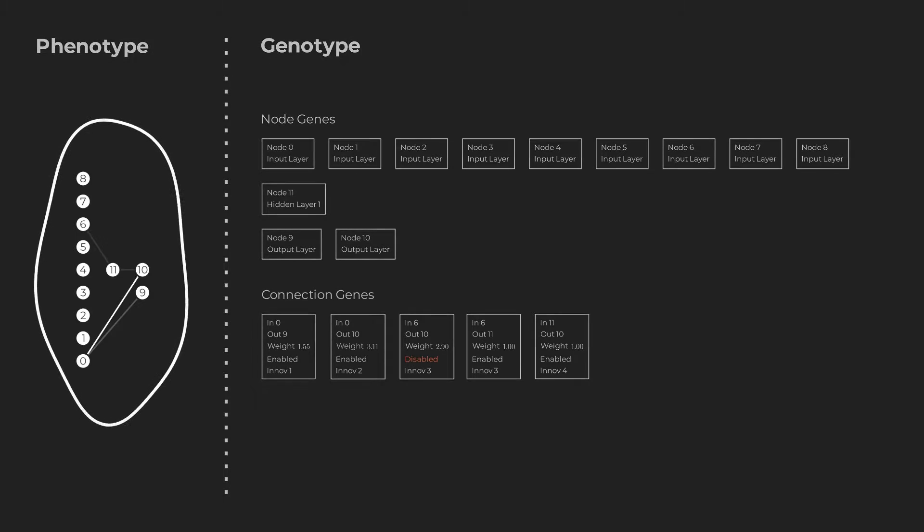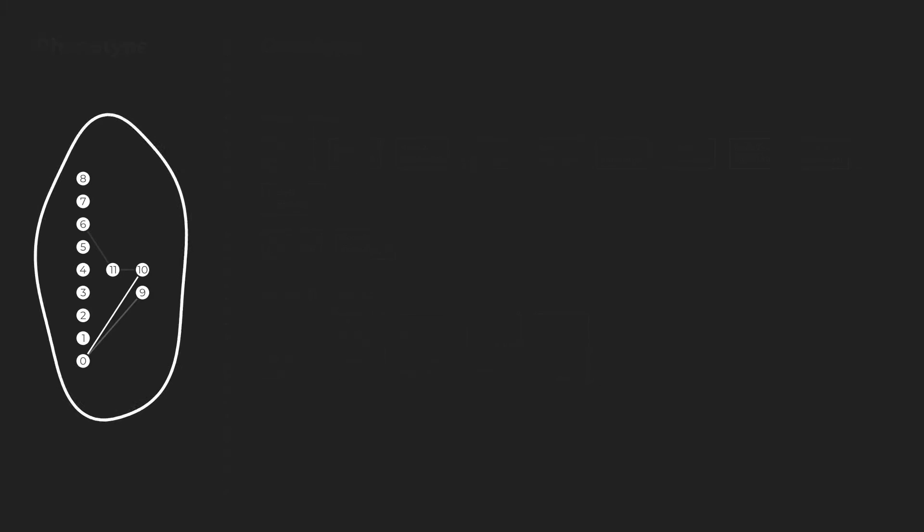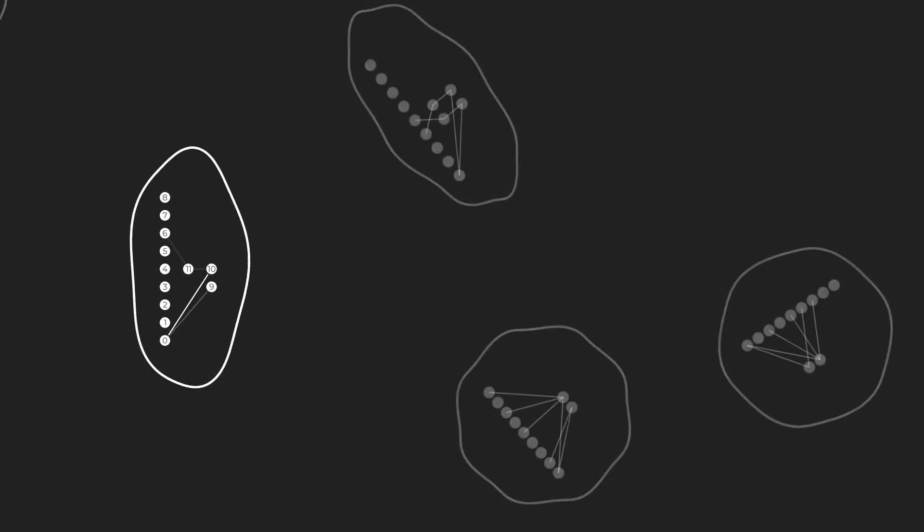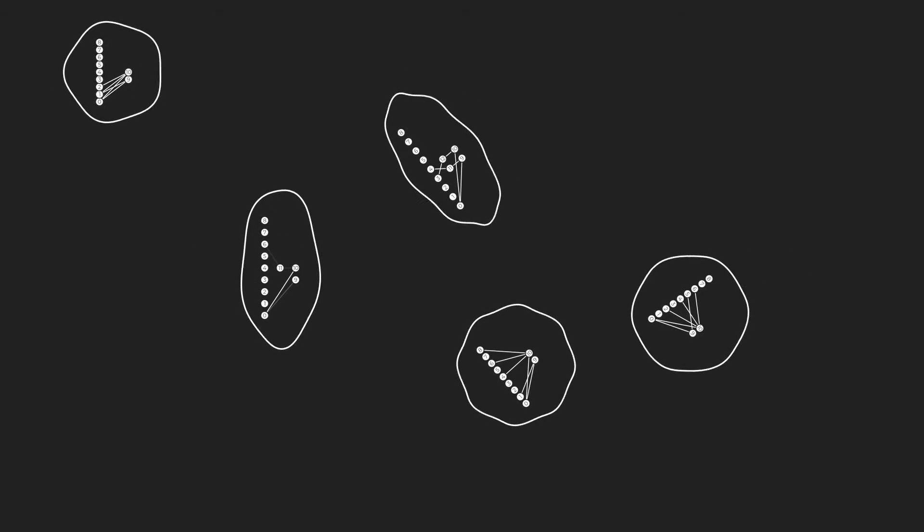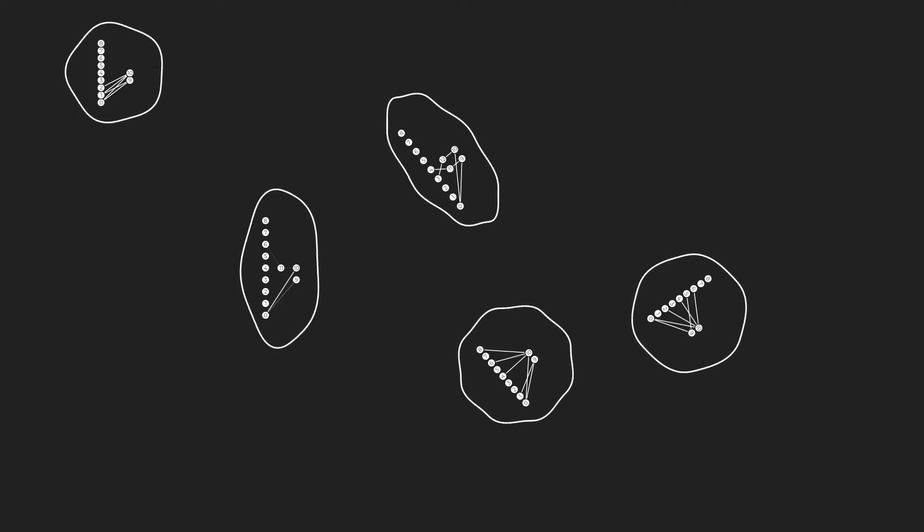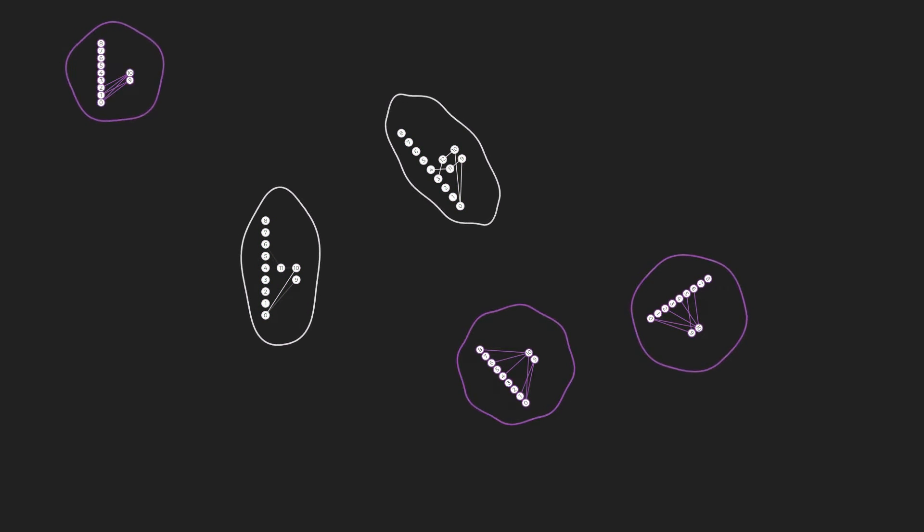Now that we understand how new genes are introduced into the gene pool, let's zoom out and look at a small population of size 5 where each network was affected by different mutations. As can be seen by their phenotypes, the population has branched into two separate species. The first has evolved to have a hidden layer, whereas the second species displays a high interconnectivity between the input and output nodes.